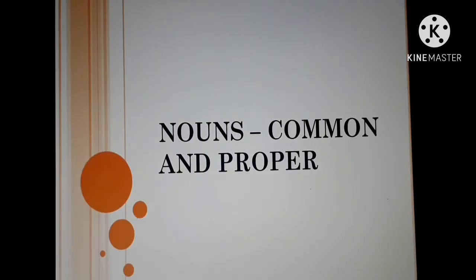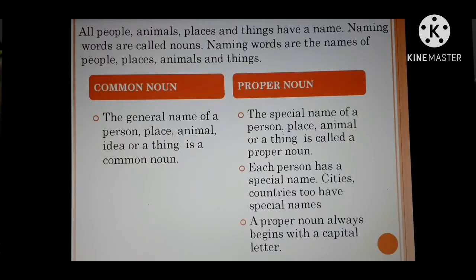The next topic is nouns — common and proper. What are nouns? Names of people, places, animals, and things are called nouns. Naming words are called nouns. All people, animals, places, and things have a name — naming words hi logon ke, jagahon ke, animals aur chizon ke naam hote hain, aur inhe nouns kaha jaata hai.